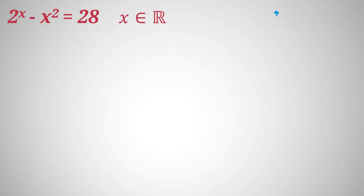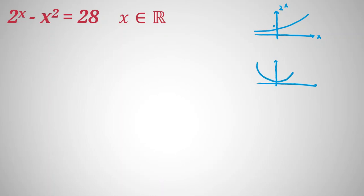If we consider 2 to the x — let's use intuitive thinking — the diagram of 2 to the x is an increasing function in terms of x, and the y-intercept is 1. And x squared is a separate curve.